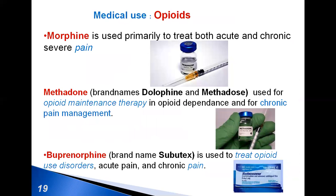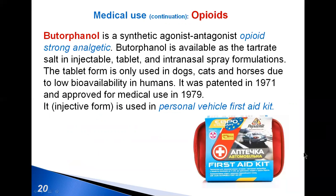Morphine and other opioid-based medicines have been identified by the World Health Organization as essential in the treatment of severe pain. Opioid morphine is essential in pain due to cancer. Methadone is essential in treatment and used in replacement therapy for opioid use disorders. Buprenorphine is used for opioid use disorders. Butorphanol is a pain reliever included in first aid kits.